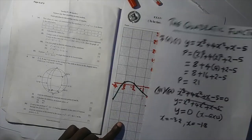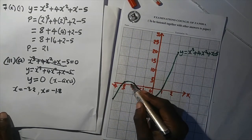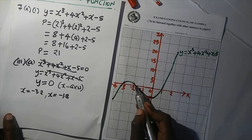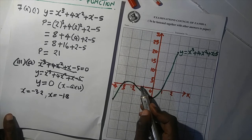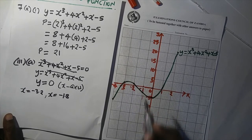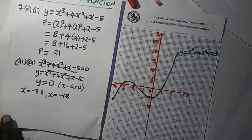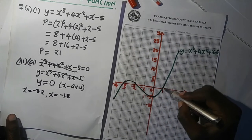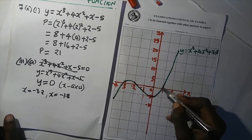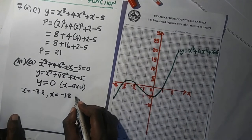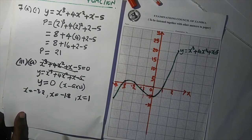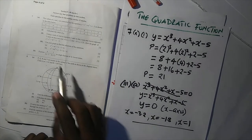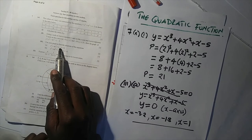Continue checking the curve. Counting from −1 step by step: 1.1, 1.2 … up to 1.8 where it cuts the x-axis confirms x = −1.8. The third intersection is on the positive side at x = 1. So the three solutions for x³ + 4x² + x − 5 = 0 are x = −3.2, x = −1.8, and x = 1.